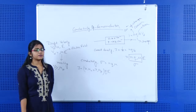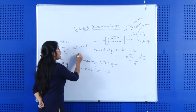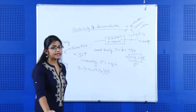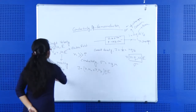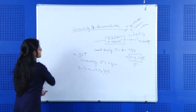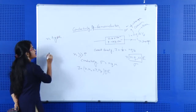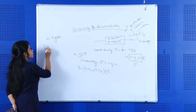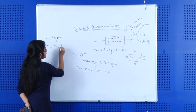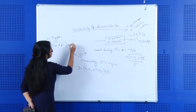For an N-type semiconductor, we know that the electron concentration N is much greater than the hole concentration P. So for N-type semiconductor, the conductivity sigma can be simplified, since the N term dominates over P in the expression N plus P times Q times mu.